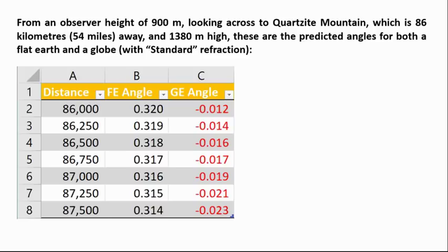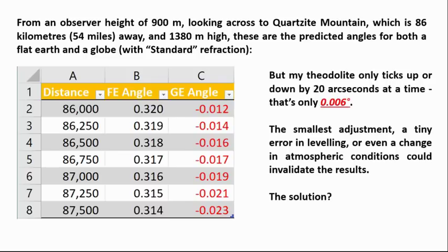So here's a table showing that from an observer height of 900 meters looking across to Quartzite Mountain, so it's 86 kilometers away and 1380 meters high. These are the predicted angles of elevation for both a flat earth and a globe. So on a flat earth at that station number one, 54 miles or 86 kilometers away, the peak of that mountain should appear 0.32 degrees above eye level. On a globe it should appear very very slightly below eye level. So putting that simple observation aside for a moment and just humoring Jay Tolan,